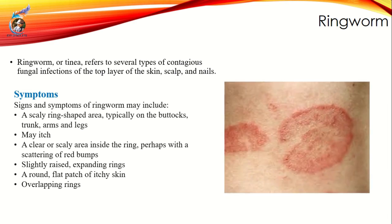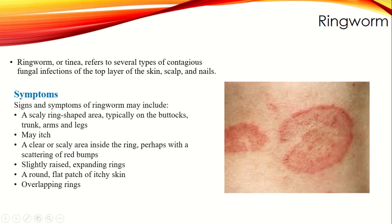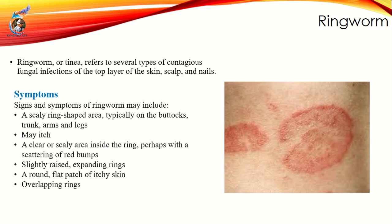The next disease is ringworm. It is a skin infection caused by a fungus, and it is highly contagious — it spreads very quickly from human to human. It is also known as tinea or dermatophytosis. The causative agents belong to the genera Trichophyton and Microsporum. Ringworm affects the skin, hair, and nails.